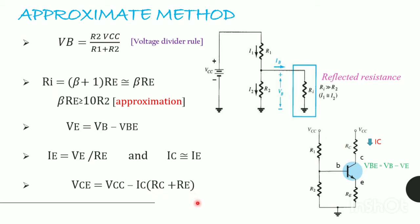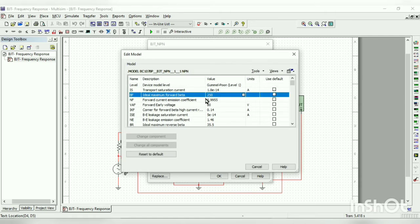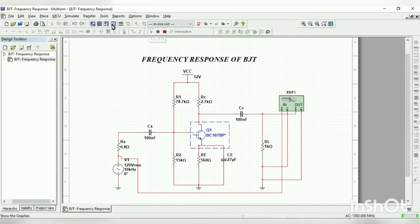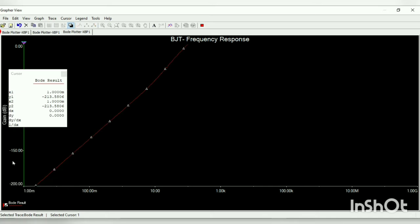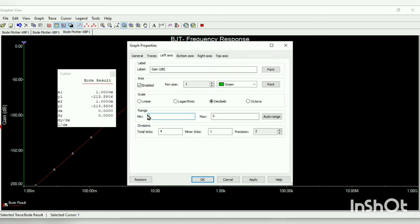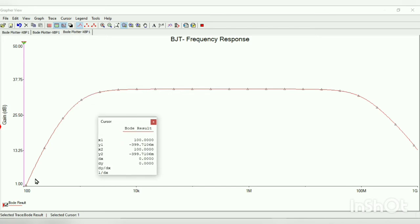Now we will see the simulation for the frequency response of BJT. Here we have the BJT circuit with voltage-divided configuration. This circuit is designed with a beta value of 250. We are going to run this simulation in interactive mode. Here we require only the gain plot, so taking off the phase. For having a clear picture, I am going to change the range.